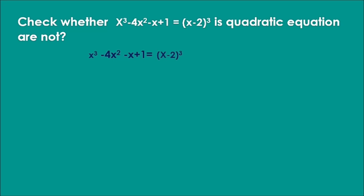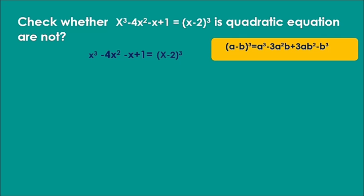The given equation is x³ minus 4x² minus x plus 1 equals (x minus 2)³. Here we use the formula: (a minus b)³ equals a³ minus 3a²b plus 3ab² minus b³. Here a equals x and b equals 2.